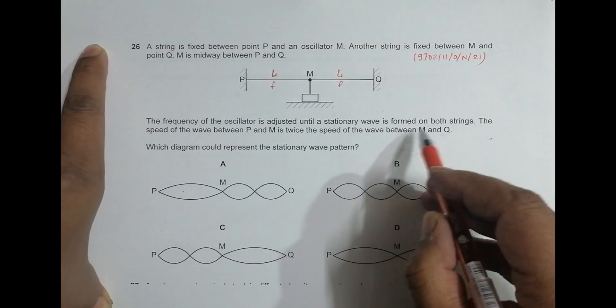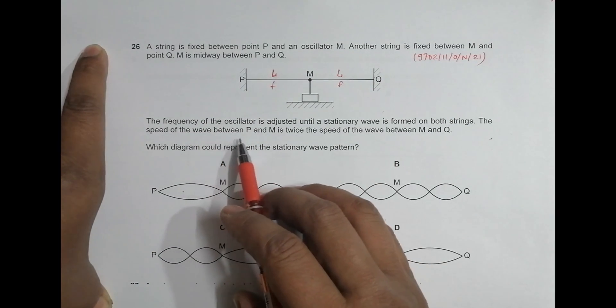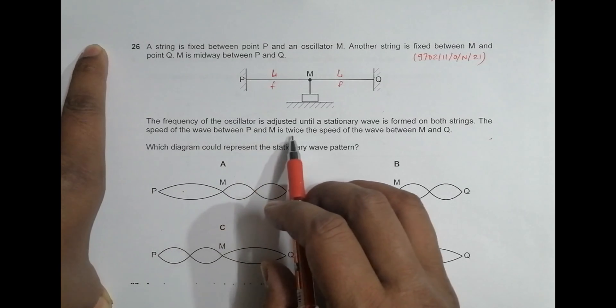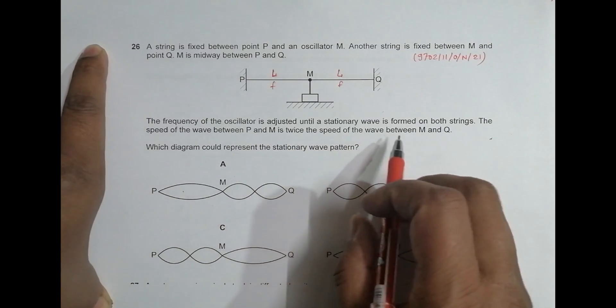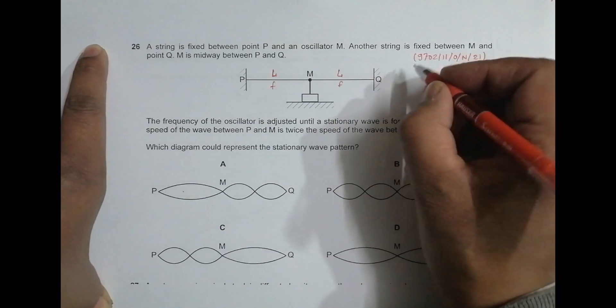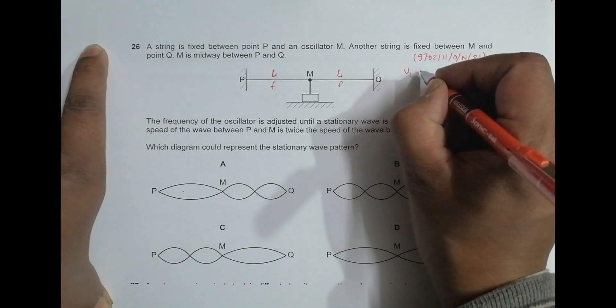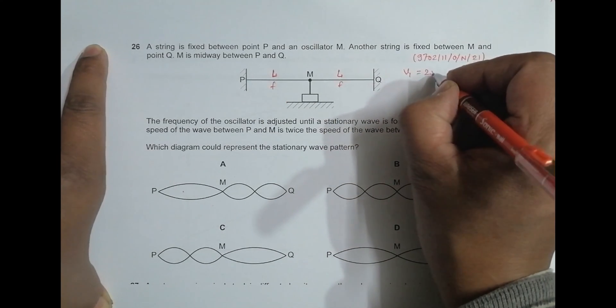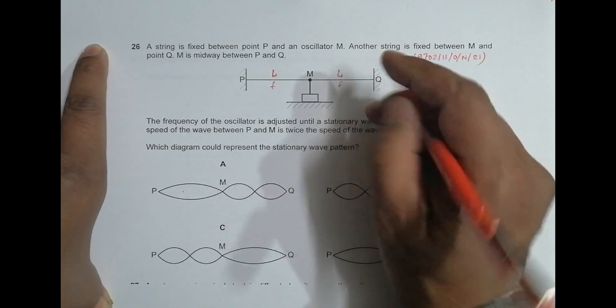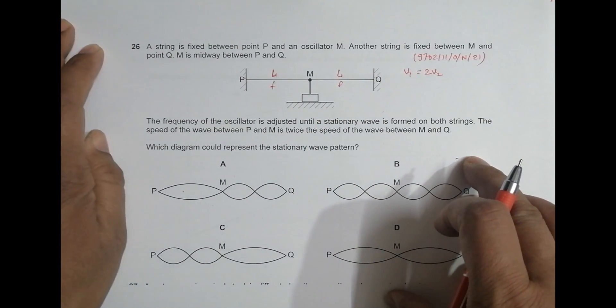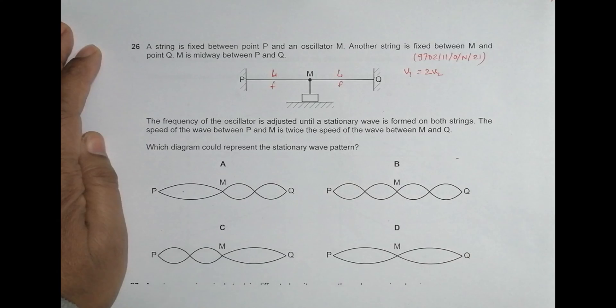Since the speed of the wave between P and M is twice the speed of the wave between M and Q, it means that if I consider this as V1, V1 at the left should be equal to twice of V2, the speed of the wave here.